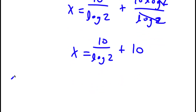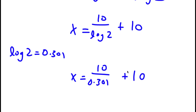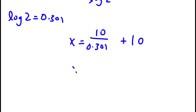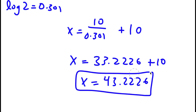Now, log 2 is equal to 0.301. So now I have x is equal to 10 over 0.301 plus 10. And 10 over 0.301 is equal to 33.2226, plus 10, which is the same thing as 43.2226. So this is my answer.